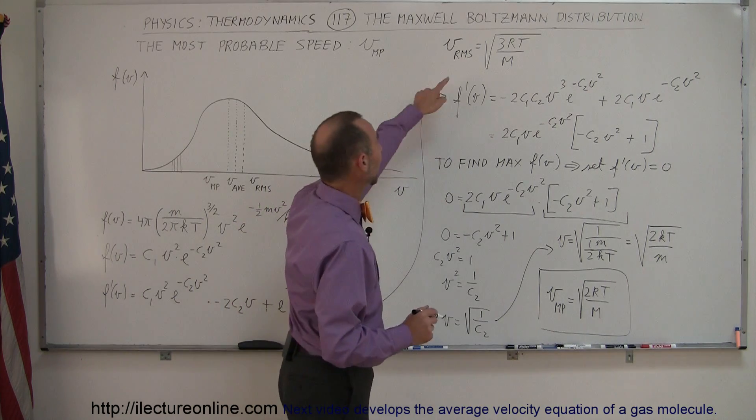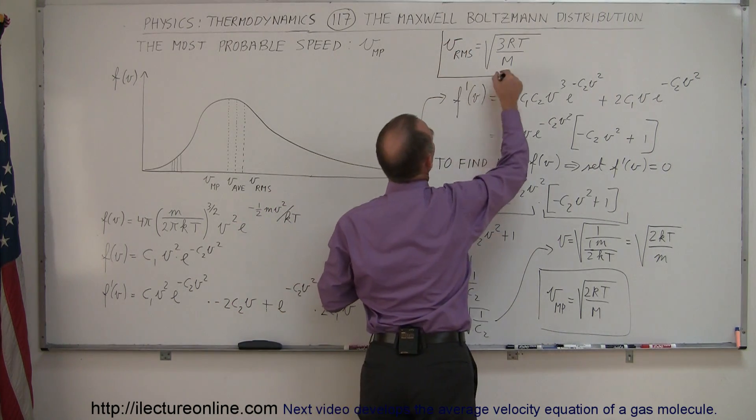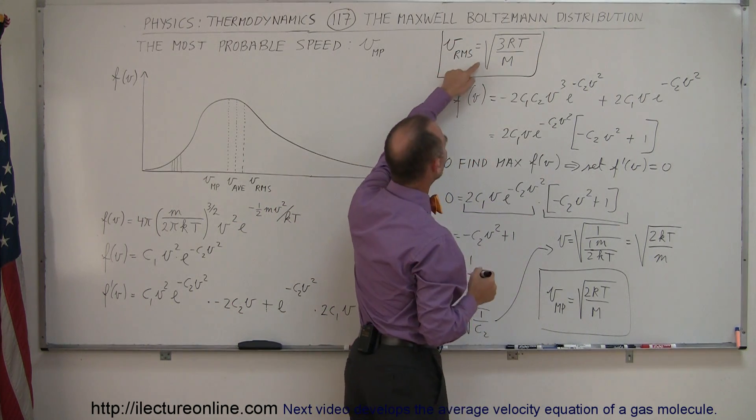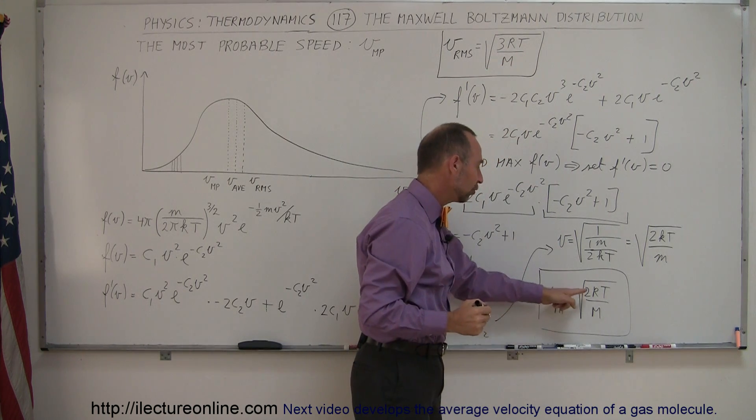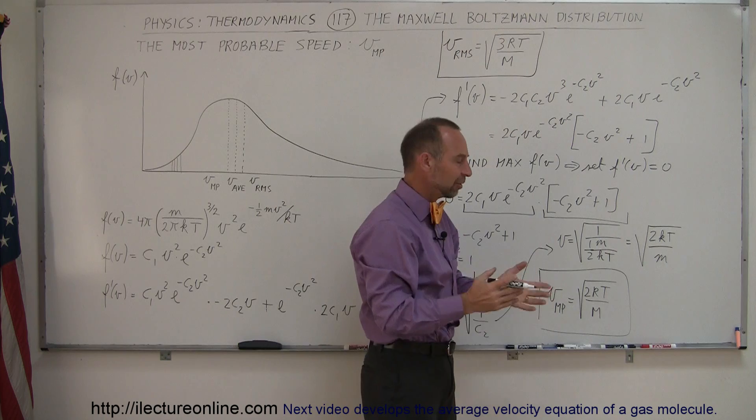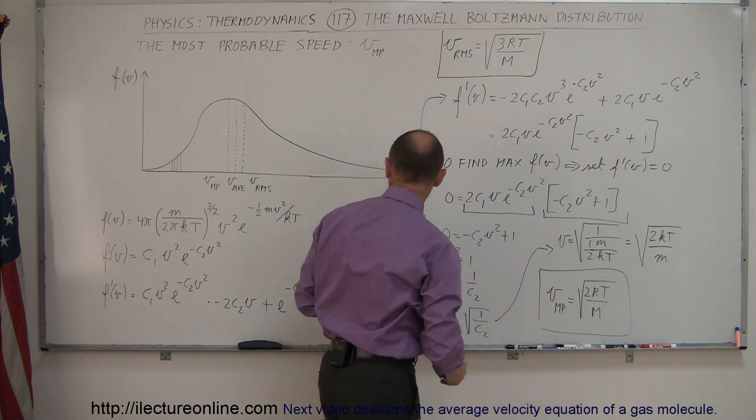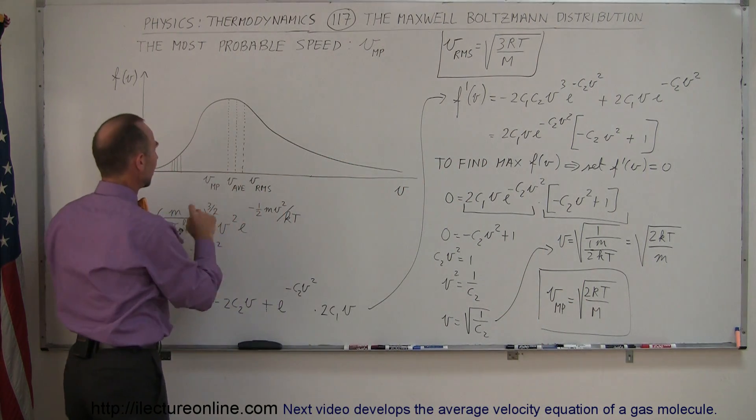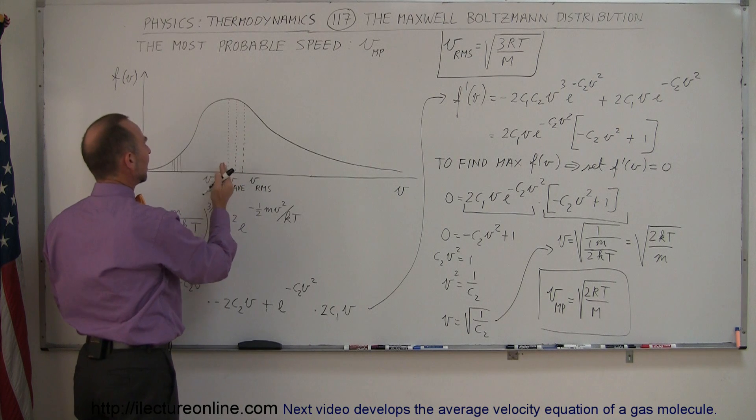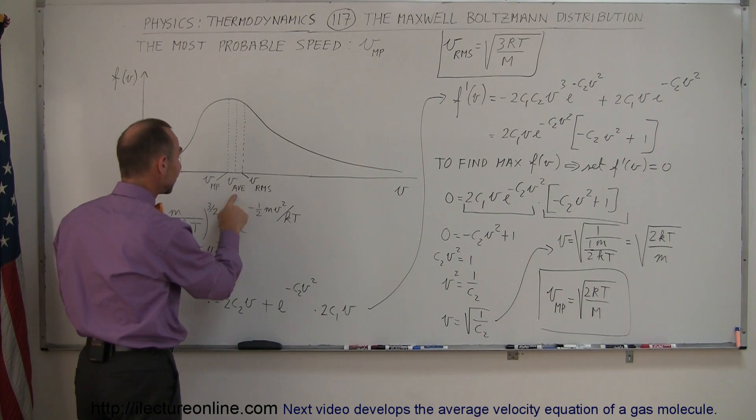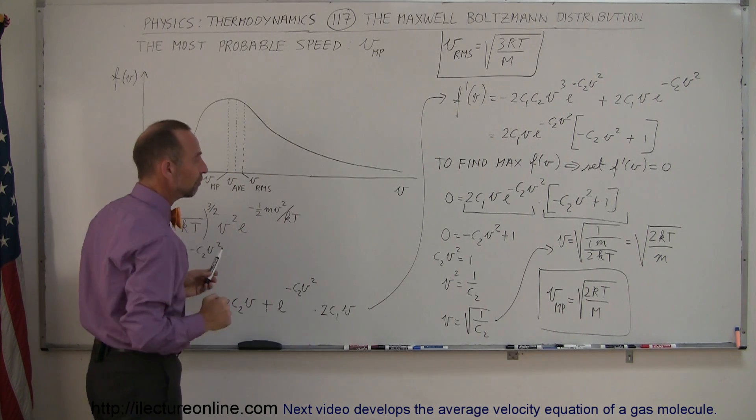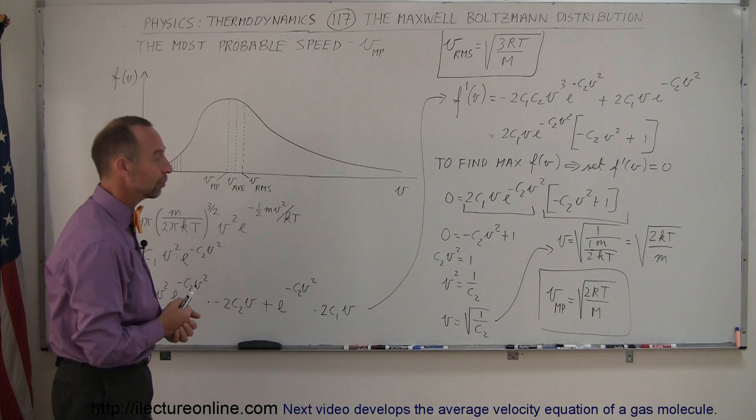Now compare that to what I had over here when I looked at the RMS velocity. It was equal to 3rt over m. And notice the most probable velocity is 2rt over m. So very much related, a little bit smaller. And therefore, you can see that sure enough, the most probable velocity is this one right here. The RMS velocity is this one right here. And as we will see in the next video, the average velocity is somewhere between those two values. And we'll figure out what that is equal to.